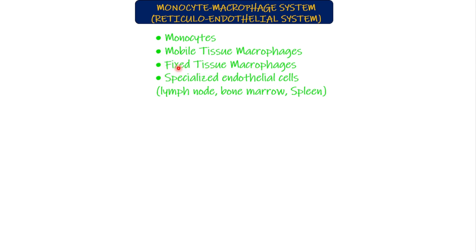Other than monocytes and tissue macrophages, we have specialized endothelial cells in lymph nodes, bone marrow, and spleen. These specialized endothelial cells have collections of macrophages sitting in them. The main function of monocytes and macrophages is related to defense — whenever there is a foreign invader, these macrophages will go and eat them up.